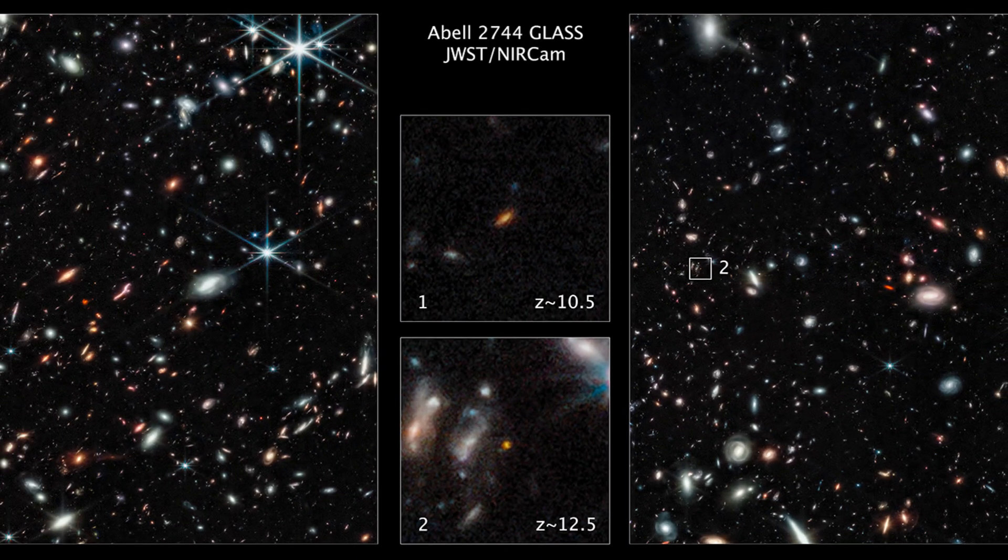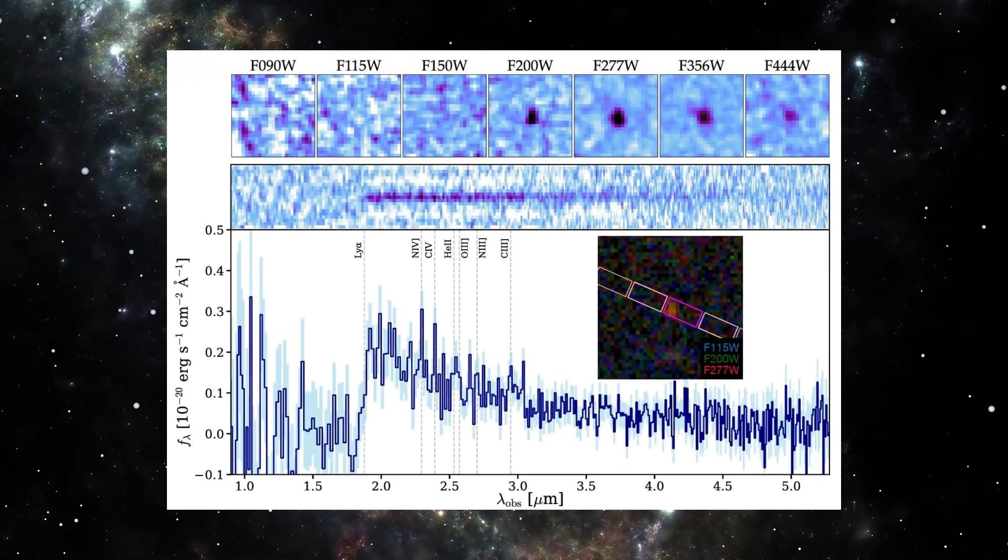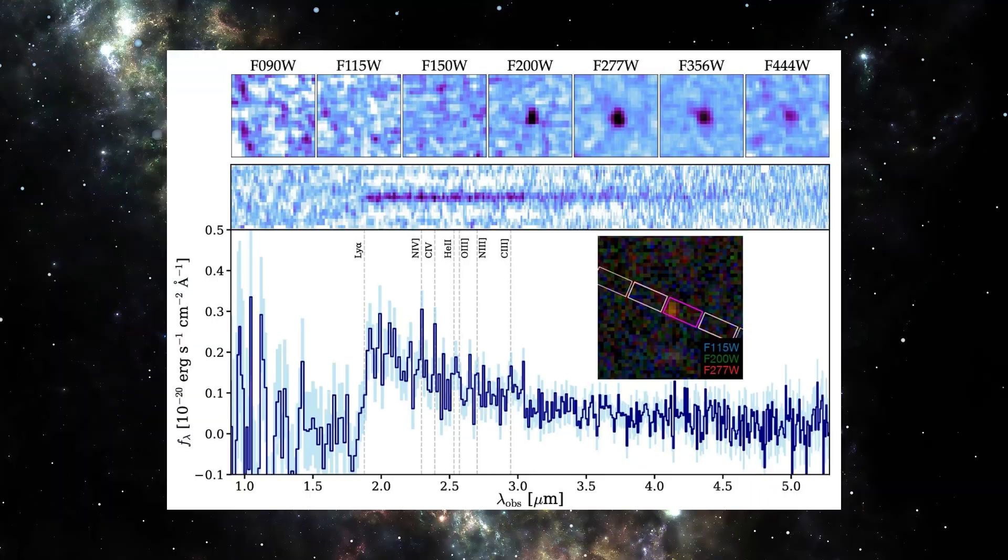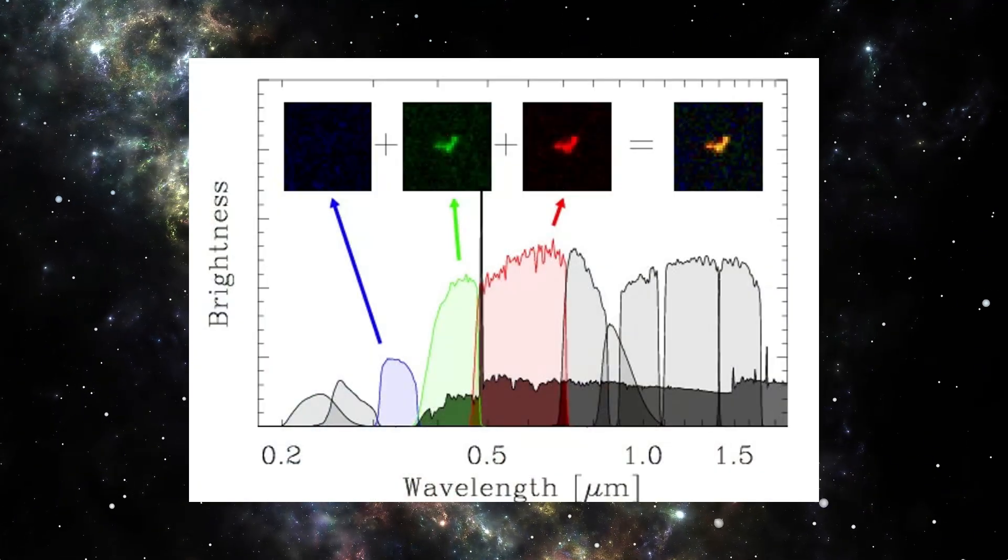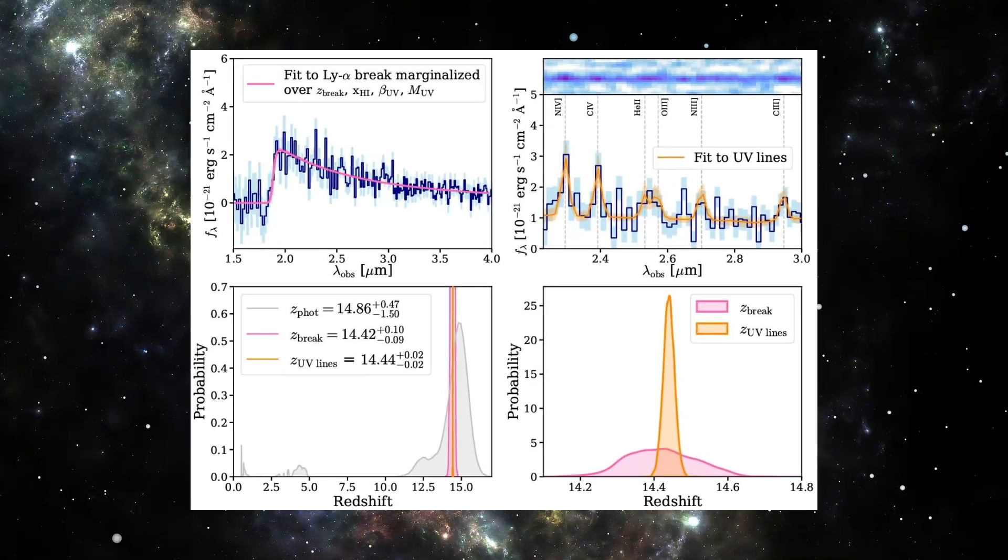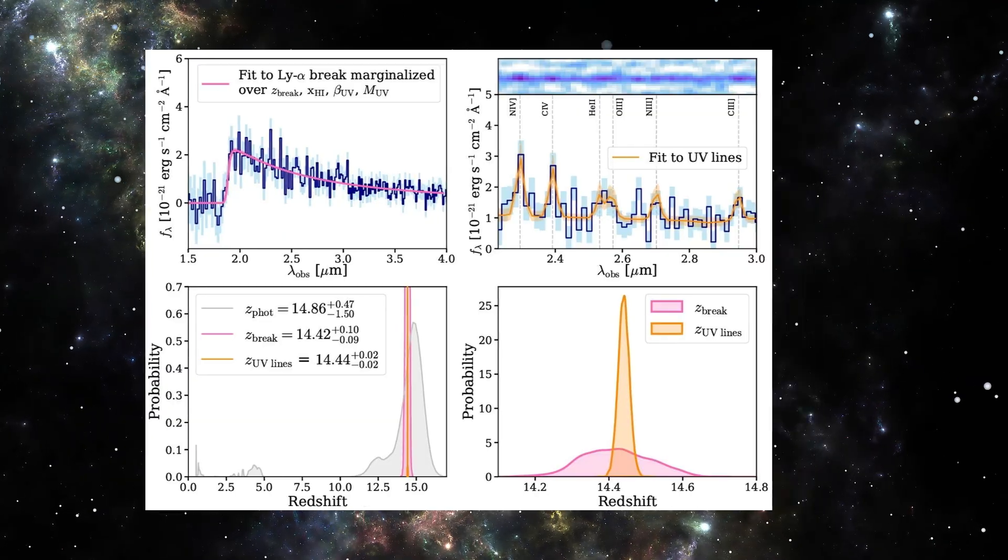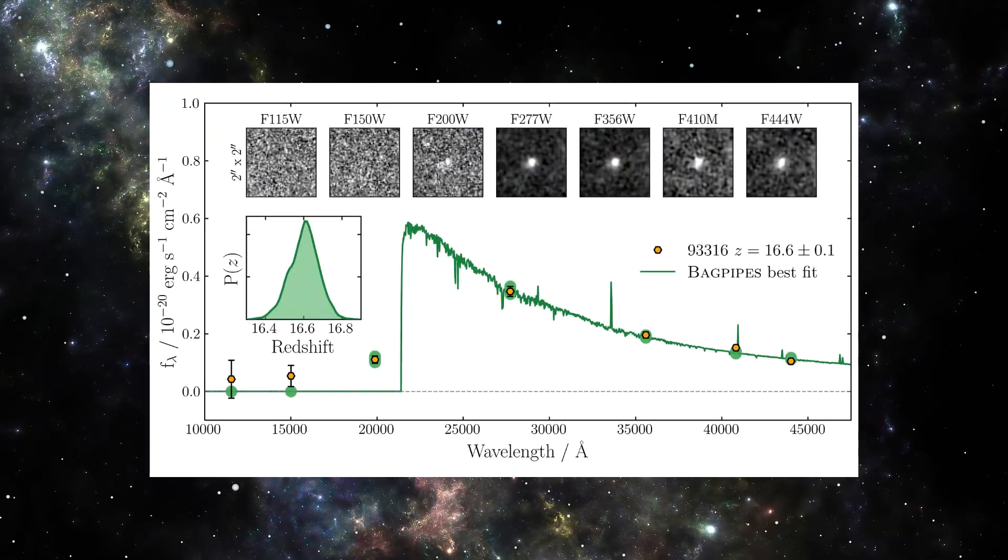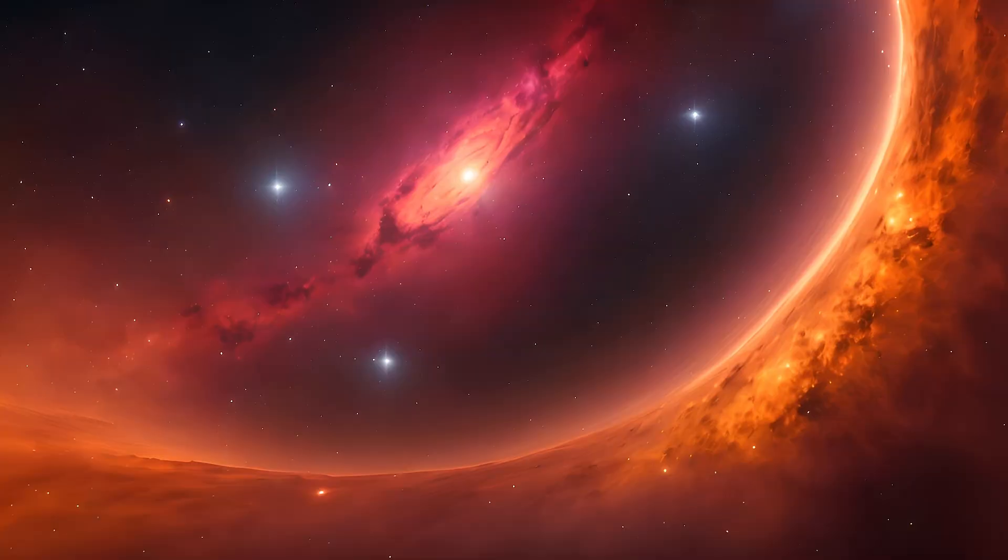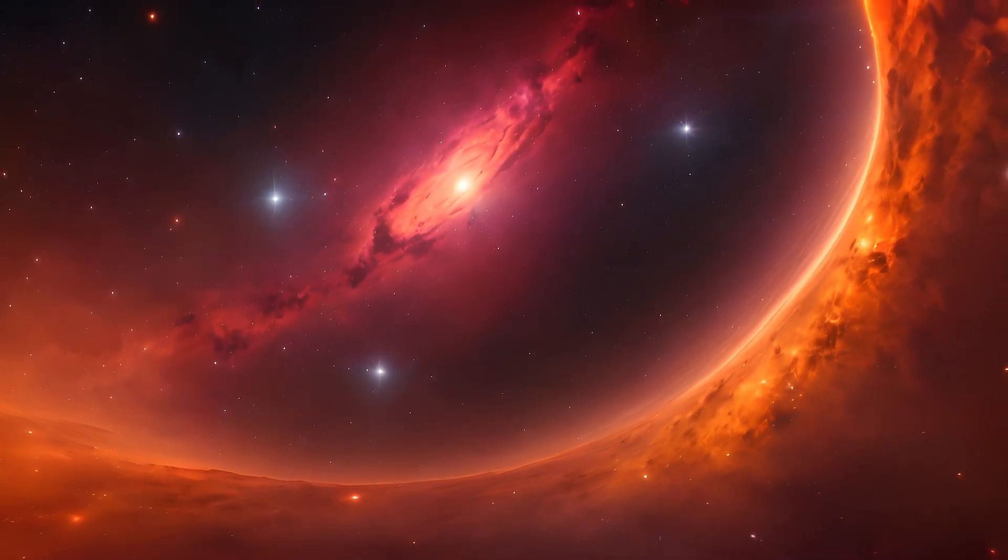First, JWST's NearCam images. Notice MOEM Z14 basically vanishes at shorter wavelengths and only appears past approximately 1.8 microns, a classic Lyman break dropout. Then, NearSpec split the light and, this is the key, saw a sharp Lyman alpha break plus several faint UV emission lines. That combo is the gold standard for a confirmed distance, not just a candidate.